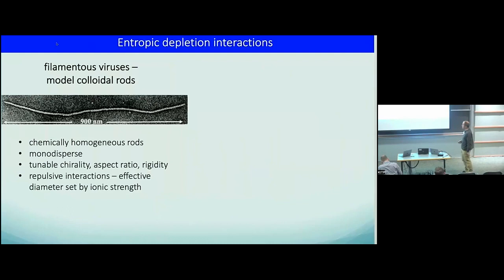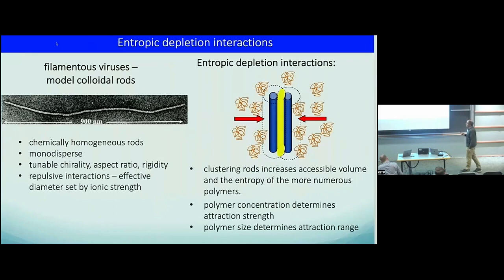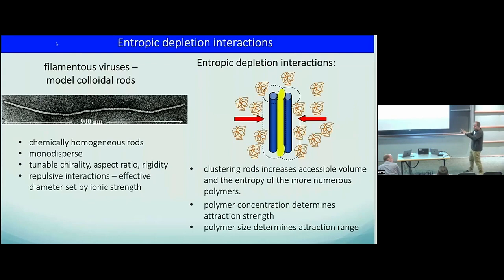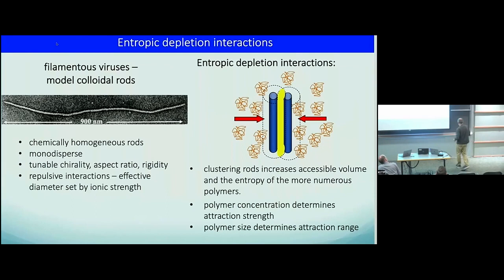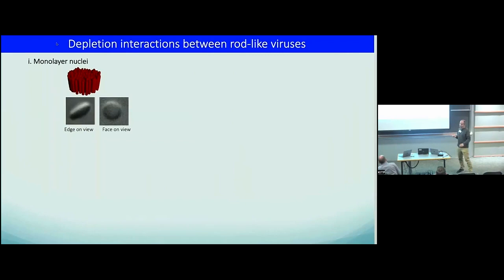There's salt in solution, so there's an effective diameter set by the ionic strength. What we do is simply mix these rods with a non-absorbing polymer, which induces a well-known depletion interaction. When you have two rods, there's an overlap of excluded volume, with higher polymer concentration on the outside, leading to attraction between the rods. Rods attract differently than spheres: they want to come together and maximize the overlap length, minimizing their center-to-center distance.